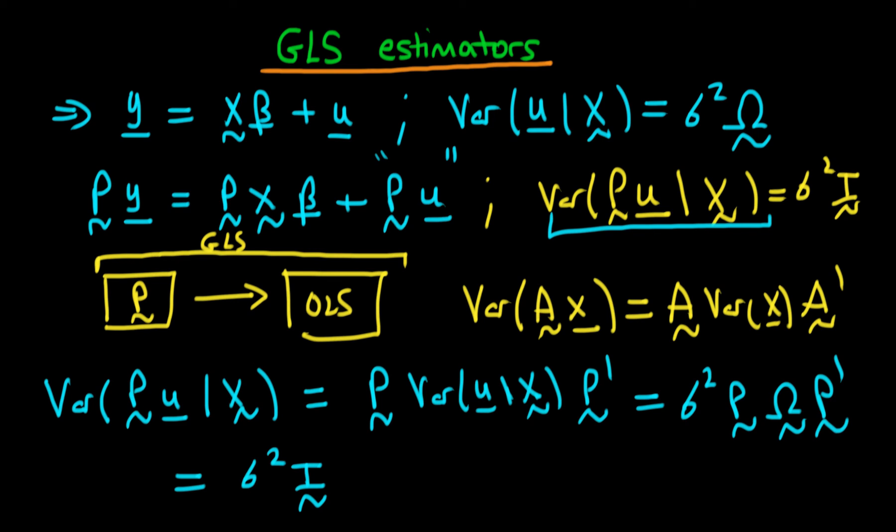And by comparing this particular form here with this form here, we actually are going to get an equation. So we must have that the identity matrix I is equal to P times omega times P prime. And this is going to enable us actually to derive the explicit form of P in the next video.